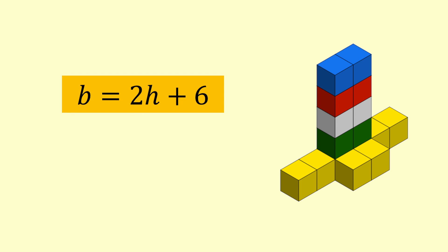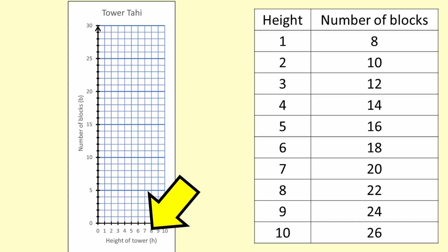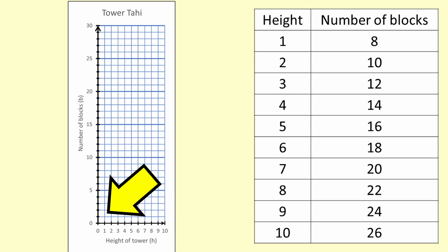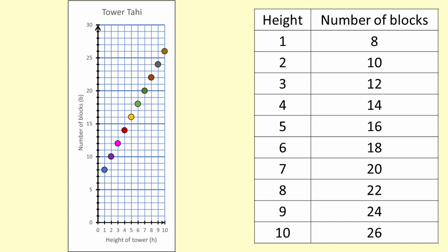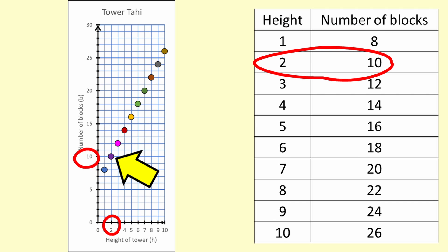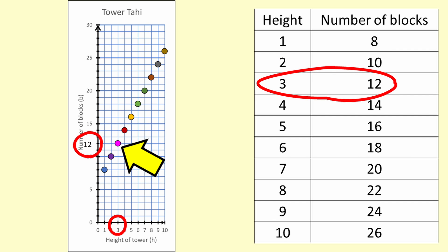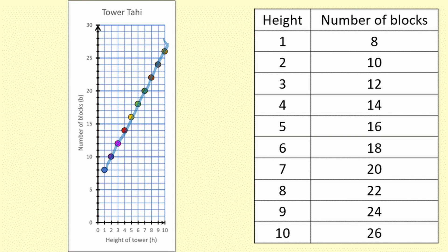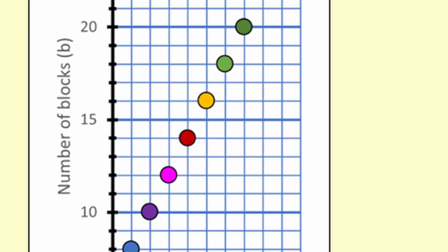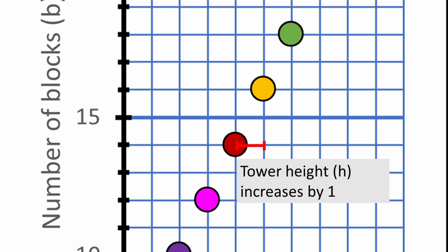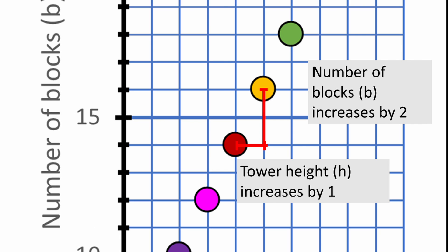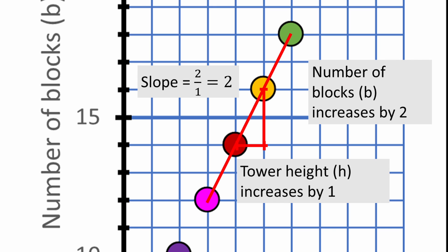We can also plot this relationship on a Cartesian graph. We will put the height along the horizontal axis and the number of blocks on the vertical axis. We are dealing with whole numbers of blocks, so we will use dots to show the relationship. This point represents a tower of height 1 containing 8 blocks. This point represents a tower of height 2 containing 10 blocks. This point a tower of height 3 with 12 blocks, and so on. You can see that the dots form a straight, sloping line. Every time the height increases by 1, the number of blocks increases by 2. This is known as the slope of the graph. This graph has a slope of positive 2.